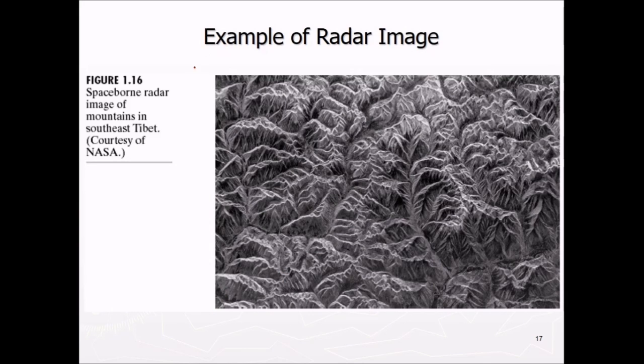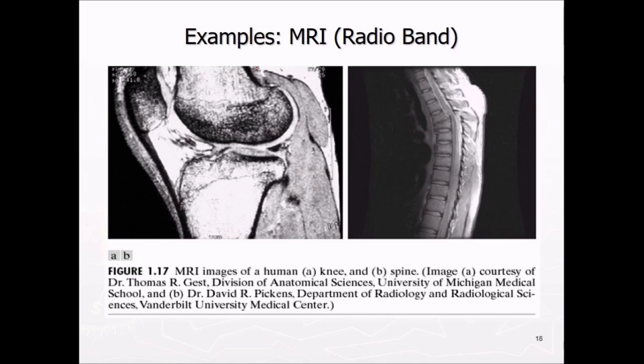These are the examples of radar images. These are the space-bound radar images of mountains in Southeast Tibet. This is MRI or radio scan of human first. This is of knee. This is of spine.